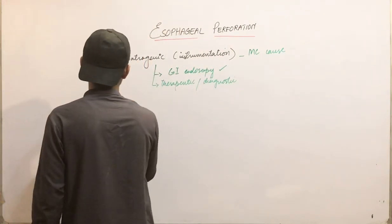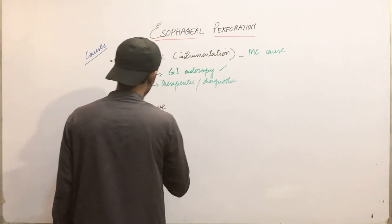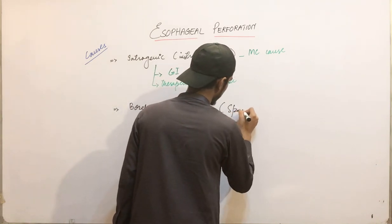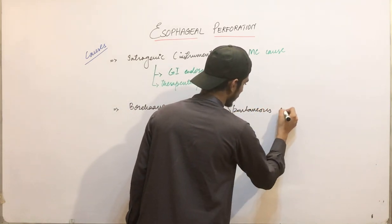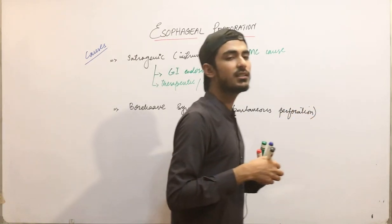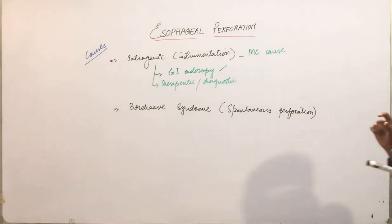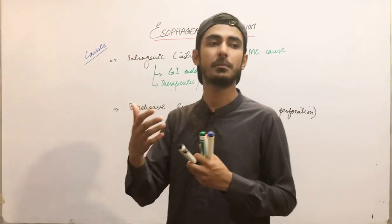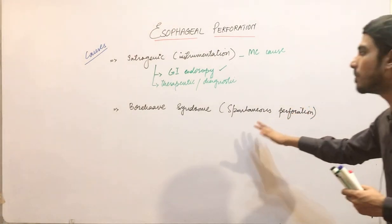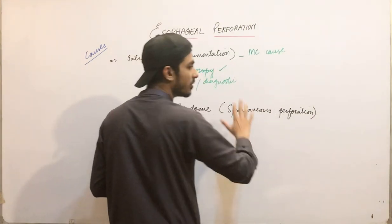The second cause is Boerhaave syndrome, which you have also studied in special pathology in fourth year. It is also called spontaneous esophageal perforation. In this condition, the patient vomits against the closed glottis, causing intra-abdominal pressure to develop, which results in perforation of the esophagus.